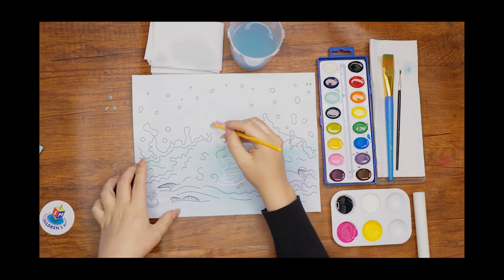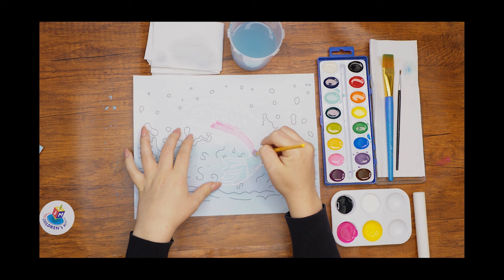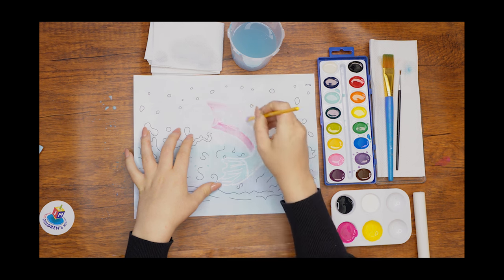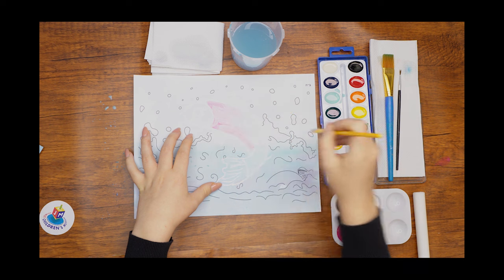In Parshas Vayechi we learn that Yaakov blesses Yosef's two sons, Menashe and Ephraim. Part of the bracha he gives them is to multiply like fish. What special lesson could we possibly learn from fish?